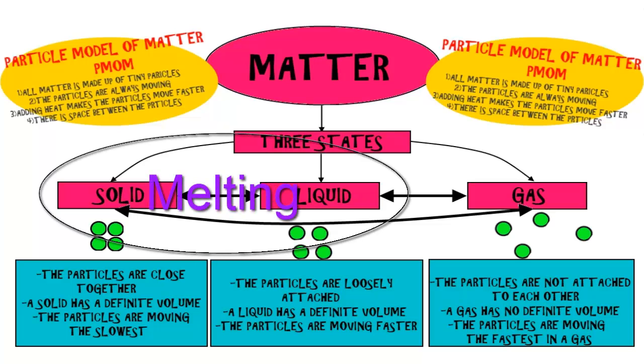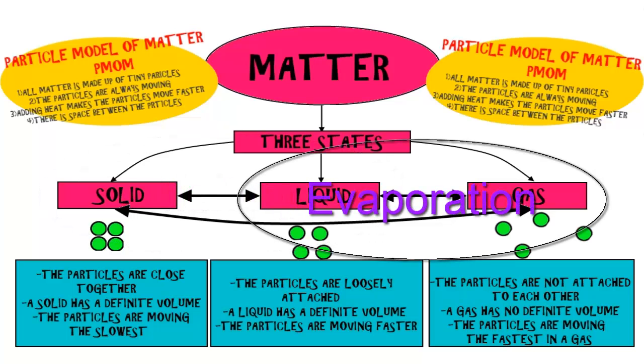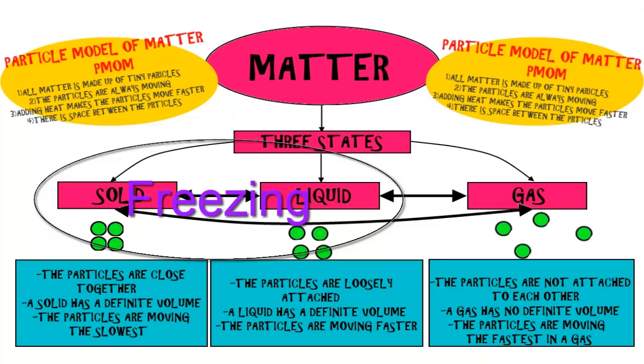Now when you go from a solid to a liquid, this is called melting. When you go from a liquid to a gas, this is called evaporation. Now you can go from a gas to a liquid, and that would be called condensation. Or you could go from a liquid to a solid, and that would be called freezing.